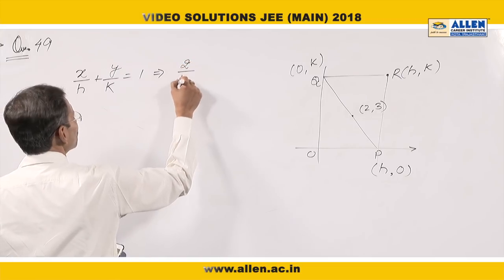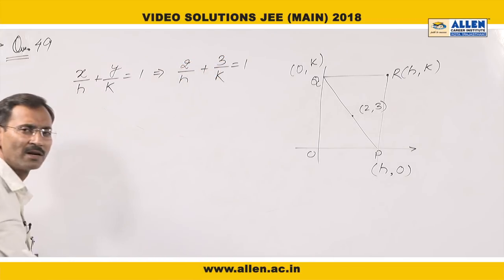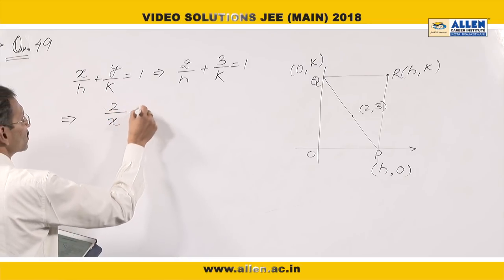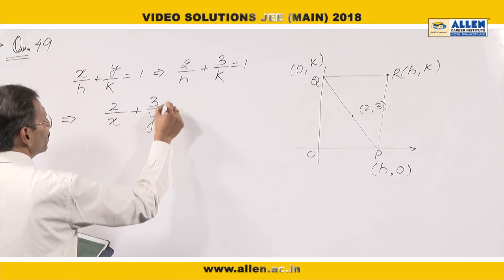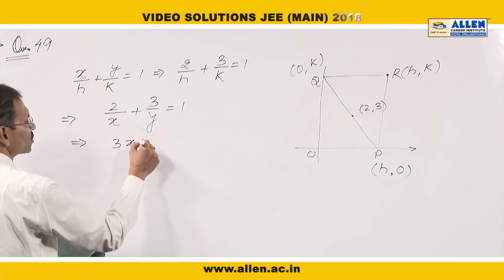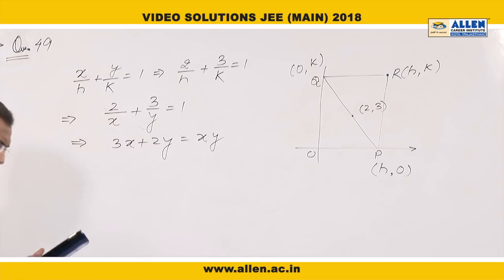So it is 2 by H plus 3 by K equals to 1. This is the relation between H and K. To find the locus, I will generalize it replacing H by X and K by Y. This gives us the locus. I am writing it as 3X plus 2Y equals to XY. So the correct option will be 2. The answer is 2.